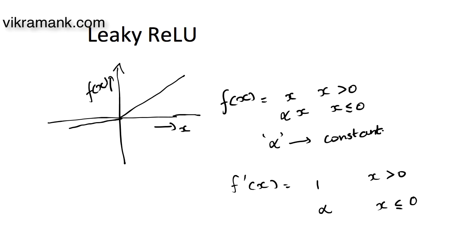Leaky ReLU is a special case of parametric ReLU where, instead of a learnable slope parameter, we use a constant slope value for the negative inputs — alpha — generally fixed at 0.1. The advantage over PReLU is that there is no additional computational cost; it runs at roughly the same cost as plain ReLU. Researchers have also claimed better performance than standard ReLU.